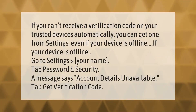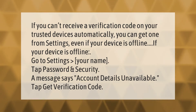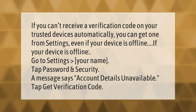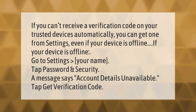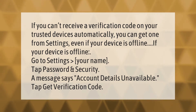If you can't receive a verification code on your trusted devices automatically, you can get one from Settings even if your device is offline. Go to Settings, then your name, and tap Password and Security. If a message says 'Account details unavailable,' tap 'Get Verification Code.'